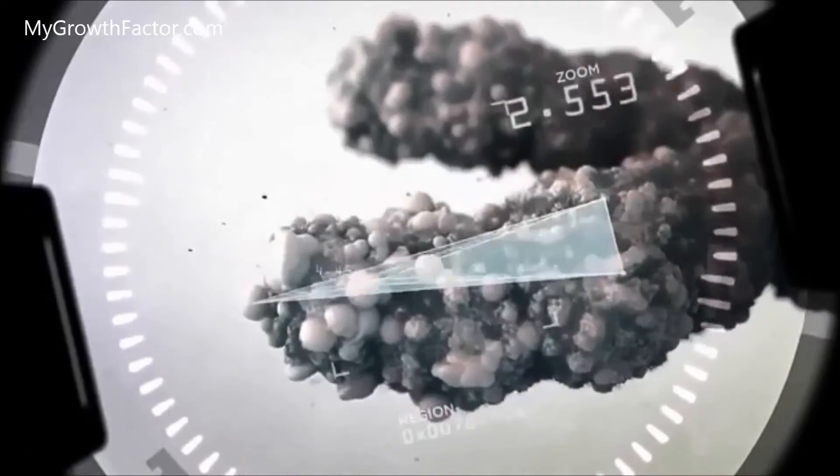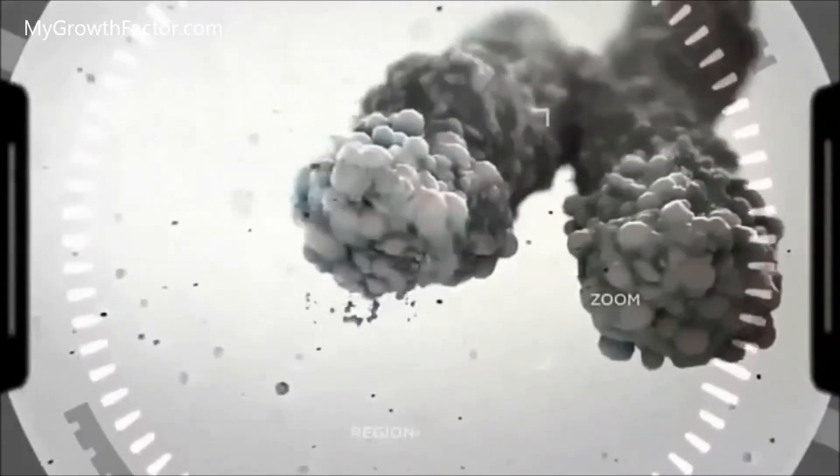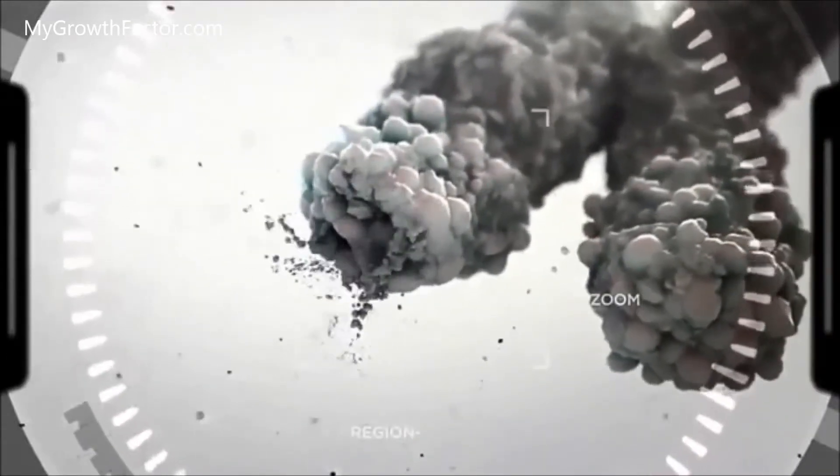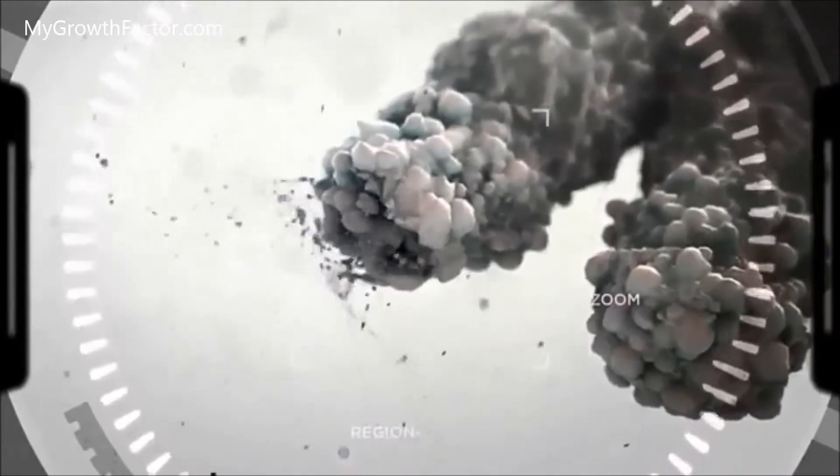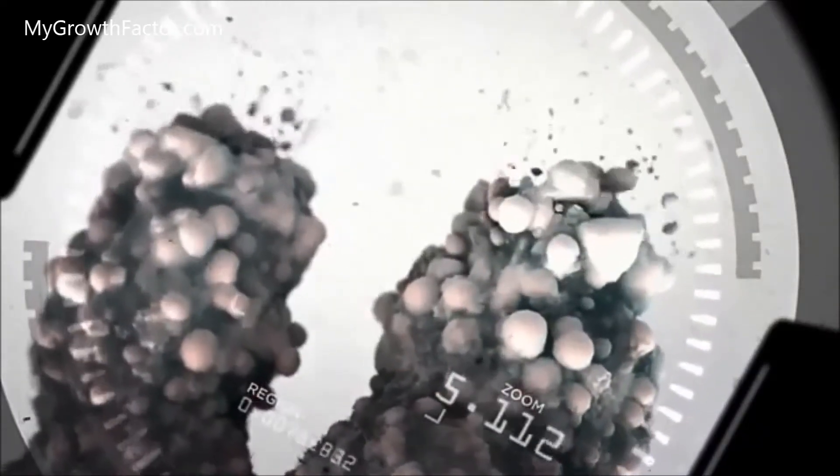When we are born, our telomeres are long, but as time goes on, they begin to shorten. So short, in fact, that our telomeres fray, similar to the end of a shoelace, and our journey called aging begins.